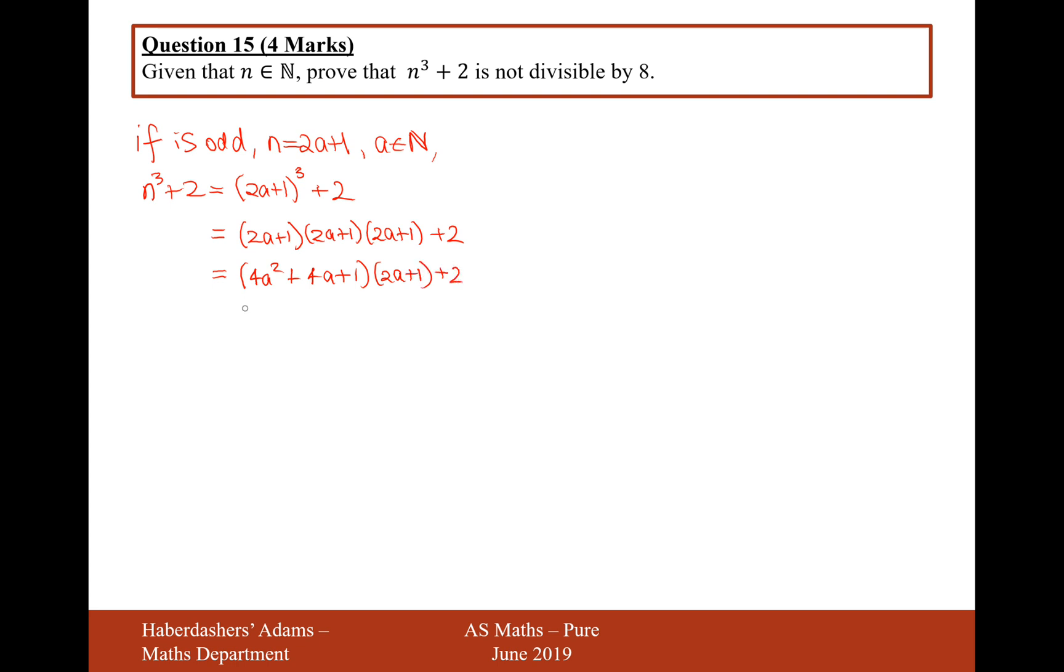When we expand it fully, it's going to give us 8a cubed plus 4a squared plus 8a squared plus 4a, and then plus 2a, and then plus 2a, and then plus 1, and then plus 2 on the end. One more step to simplify: 8a cubed plus 12a squared plus 6a plus 3.